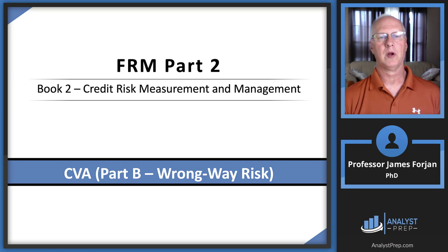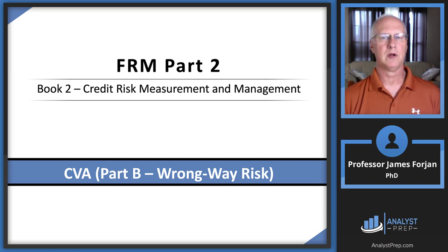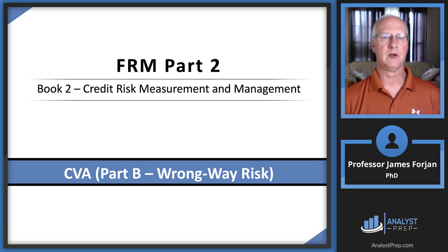This is FRM Part 2, Book 2, Credit Risk Measurement and Management, and the second part of the chapter on CVA: Wrong Way Risk. As I go through this slide deck, I'm going to rely on your knowledge and your viewing and reading of the first part of this chapter on credit value adjustments. I'll refer to it throughout the slide deck.